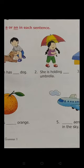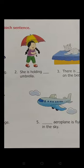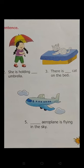She is holding ___ umbrella. Children, 'U' is a vowel, so we will fill in 'an' there. And she is holding an umbrella. Okay, next one is: 'There is ___ cat on the bed.' What will we fill there — 'a' or 'an'?